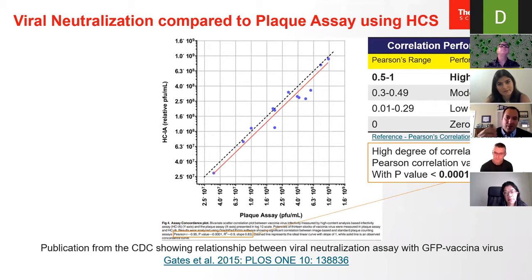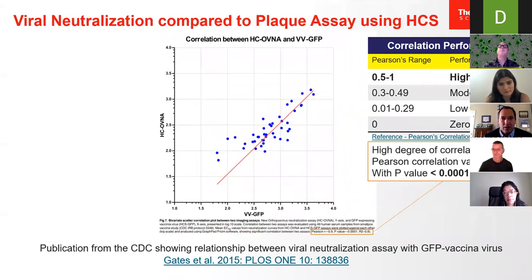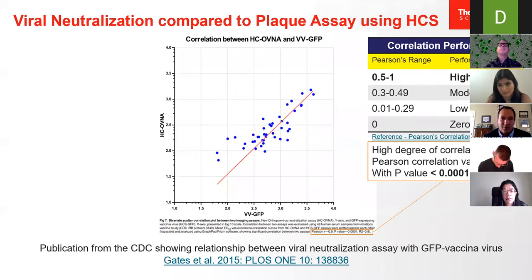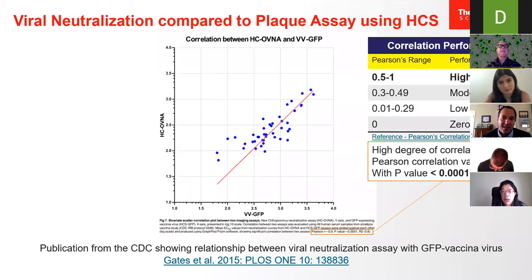On the y-axis, this is looking at the high-content plaque assay, and on the x-axis horizontally is looking at the gold standard manual method. What they published was extremely good: a Pearson's correlation of 0.95, p-value less than 0.0001 — a very high degree of correlation between the two assays. They then followed it up with a correlation looking at neutralization between high-content versus a GFP viral vector method, again seeing a correlation of 0.9 with a p-value of 0.001. Advantages cited included earlier detection of the virus, the ability to use smaller samples, images on a secure server, and potential multiplexing with other mechanism-of-action markers.